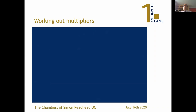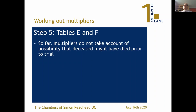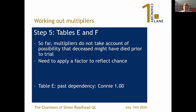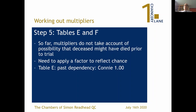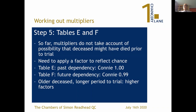The multipliers then need adjustment. Tables E and F in the Ogden tables take account of the possibility that the deceased might have died prior to the trial. You need to apply a factor to each multiplier to reflect that chance. Table E deals with past dependencies - for Connie with a three year delay to trial, that gives a figure of 1.00, so in fact we're not going to make a reduction at all. In relation to future dependency, the figures are generally larger. In Connie's case it's hardly any reduction at all at 0.99. But the older your deceased is and the longer the period to trial, the higher the factors are - they can become quite significant. So you must remember not to leave this step out.